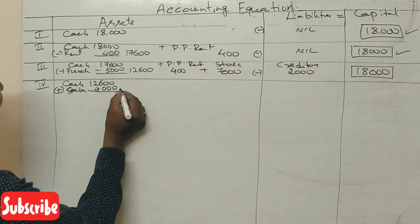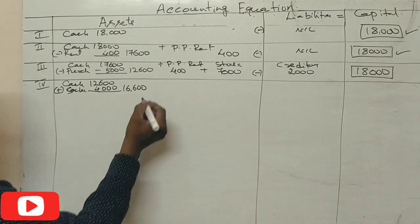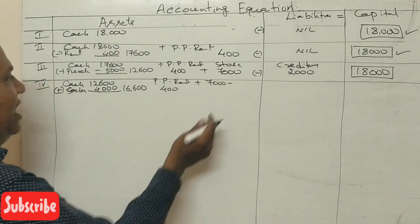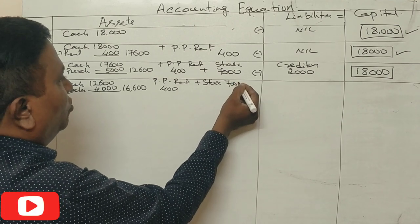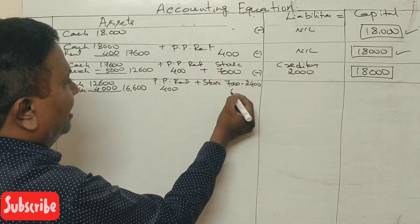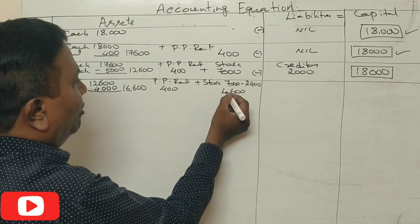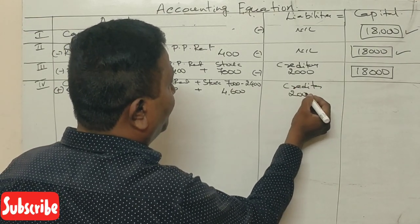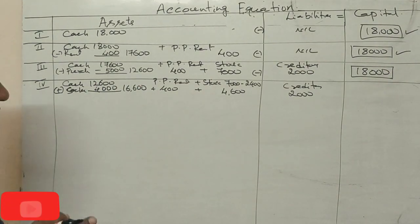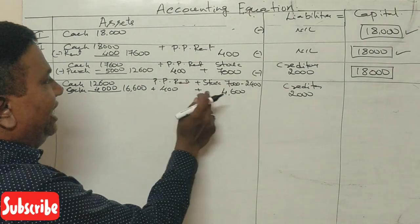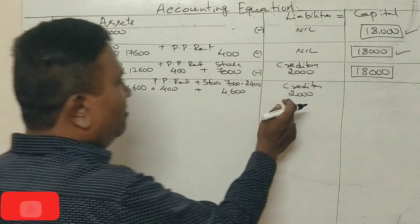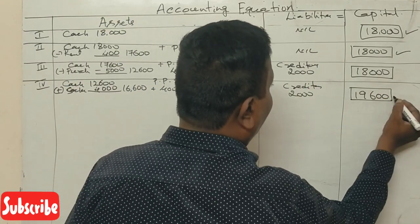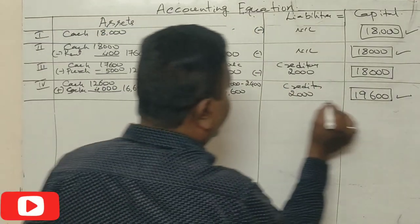Cash is ₹16,600, prepaid rent is ₹400, stock is ₹7,000 minus ₹2,400 = ₹4,600, creditors ₹2,000. Total assets: ₹16,600 + ₹400 + ₹4,600 = ₹21,600. Liabilities ₹2,000. Capital = ₹19,600 (profit of ₹1,600 added). Equation balances at ₹21,600.